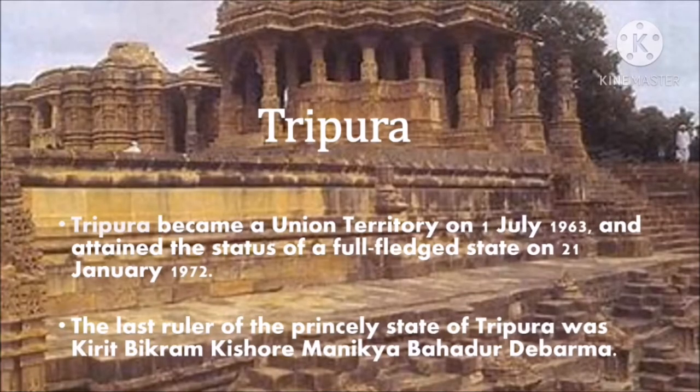History of Tripura: The last ruler of the princely state of Tripura was Kirit Bikram Kishore Manikya Bahadur Deb Burman, who reigned from 1947 to 1949. The kingdom was merged with India on 9th September 1949 and the administration was taken over on 15th October 1949. Tripura became a union territory on 1st July 1963 and attained the status of a full-fledged state on 21st January 1972. Thank you.